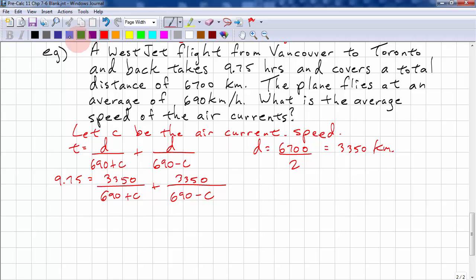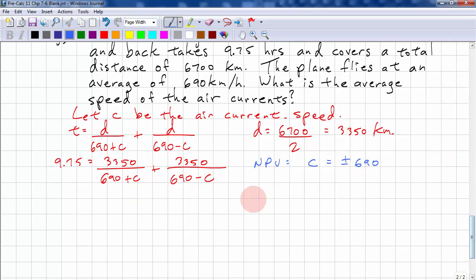So, NPV, C equals plus or minus 690. Okay, our lowest common denominator is now 690 plus C and 690 minus C. So, we need to multiply 9.75 by the LCD. And we need to multiply the 3350 by 690 minus C. And the other 3350 by 690 plus C.